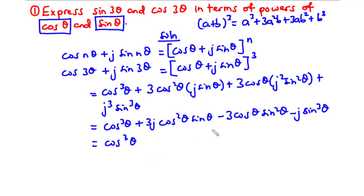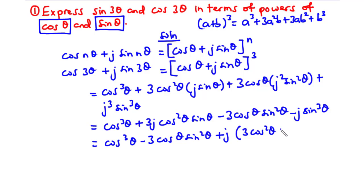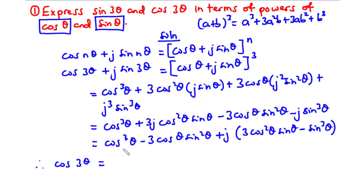Grouping into real and imaginary components: the real part is cos³θ − 3cos θ sin²θ, and the imaginary part is j(3cos²θ sin θ − sin³θ). Therefore, from the onset, cos(3θ) equals the real part: cos(3θ) = cos³θ − 3cos θ sin²θ.